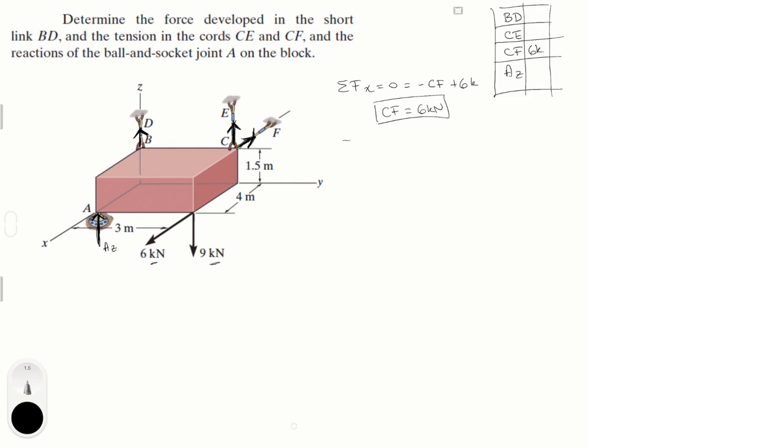Sum of the forces in the Z is equal to zero. I'm not doing the Y because there's no force that I see going in the Y, so that's why I'm just skipping that one for now. Now I'm going to do sum of the forces in the Z which is equal to zero and is equal to BD plus CE plus AZ minus 9 kN. BD plus CE plus AZ is equal to 9 kN and I'm going to call this equation 1.